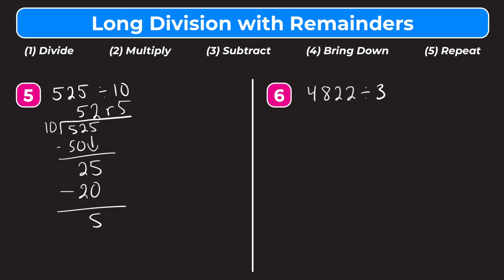Let's try number 6. We have 4,822 divided by 3. This is why long division is great — it allows us to do division problems with big numbers like 4,822 without a calculator that aren't easily intuitive in our head. Let's rewrite this as a long division problem: 4,822 under the bar and 3 outside.